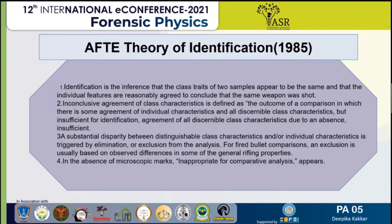There is a Theory of Identification by the Association of Firearms and Toolmarks Examiners from 1985, which follows four steps. First is identification: the class and individual characteristics of two samples appear to be the same, and individual features are in reasonable agreement to conclude they were made by the same weapon. Second is inconclusive agreement of class characteristics, defined as when comparison of two samples shows some agreement of individual or class characteristics, but not sufficient agreement across all discriminable class characteristics. Third, a substantial disparity between the class characteristics and/or individual characteristics leads to elimination — excluding the sample from the analysis.